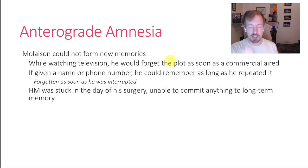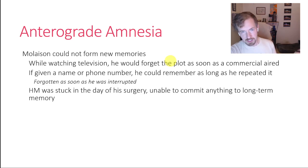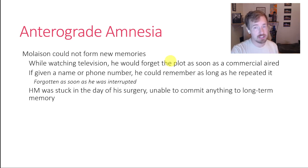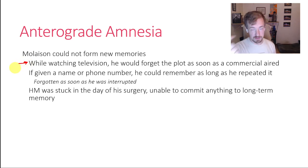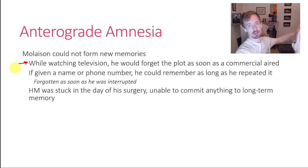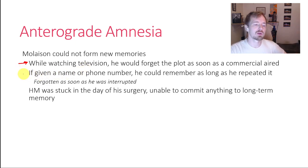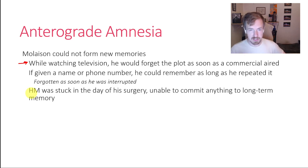Molaison was unable to form new memories, and this was such a severe case that he would forget the plot of a TV show during commercials — by the time it got back to regular programming, he'd already forgotten what was happening. If we think about different systems of memory, he had sensory memory and short-term memory, but was unable to take those short-term memories and consolidate them into long-term memory. If given a name or phone number, he could only remember it as long as he was actively rehearsing it. The moment he was interrupted, he forgot.